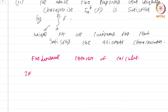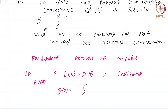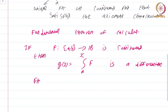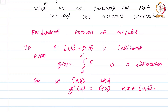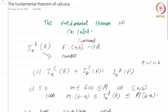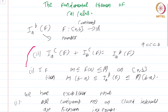If f from [a,b] to ℝ is continuous, then g(x) = ∫_a^x f is a differentiable function on the closed interval [a,b] and g'(x) = f(x) for all x in [a,b]. This follows immediately because we have already proved that any i_{a,b} satisfying those two conditions automatically satisfies the conclusion of the fundamental theorem of calculus.